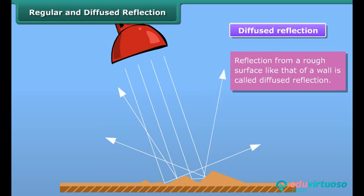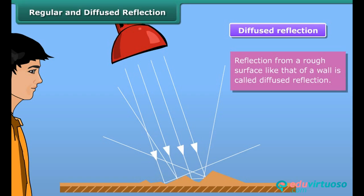In this case, the different portions of the surface reflect the incident light in different directions. The light sent to our eyes by most of the objects we see around us is due to the diffused reflection from their surfaces.